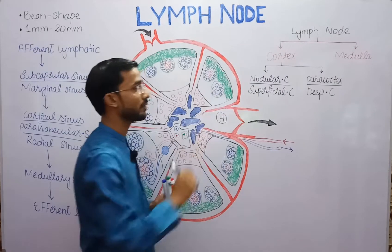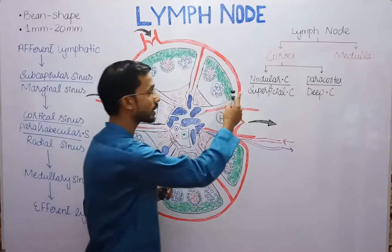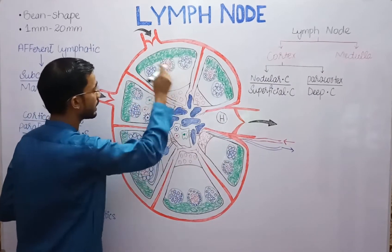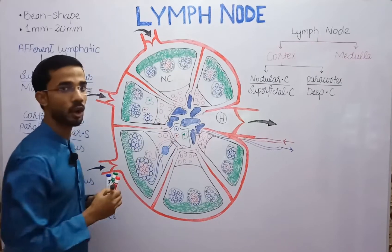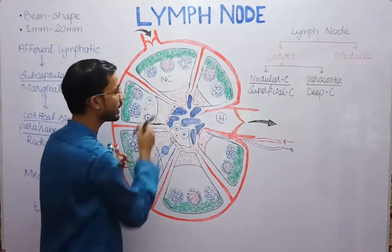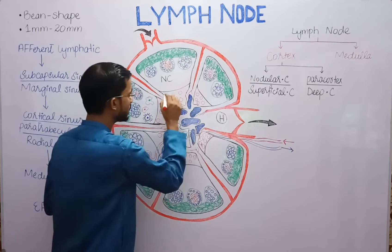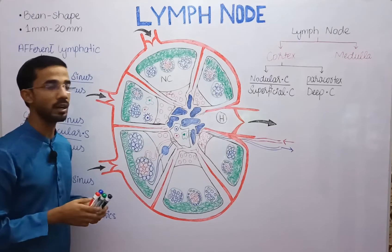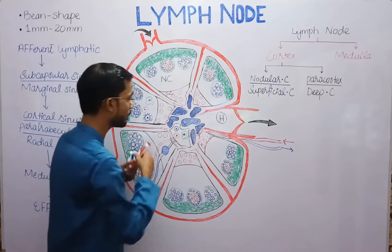The cortex is further divided into two parts: nodular cortex and paracortex. The nodular cortex is also called the superficial cortex, and below it is the paracortex, also called the deep cortex. The central region is the medulla.